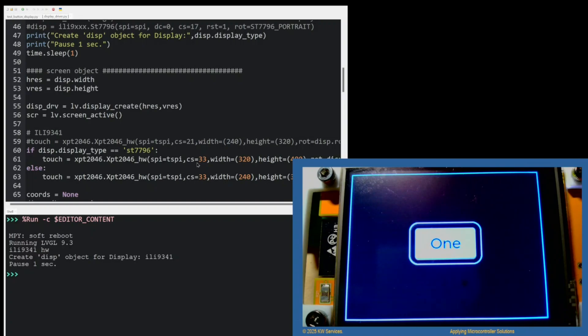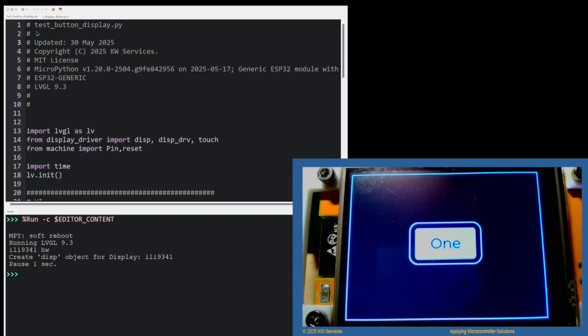Let's open the test button to display from the desktop directory into THONI. This is a very simple program to display a button. I've already clicked the green run icon to execute the program.